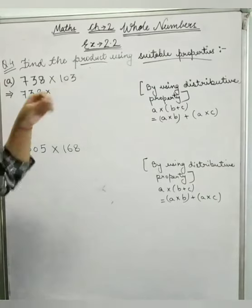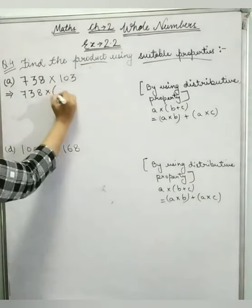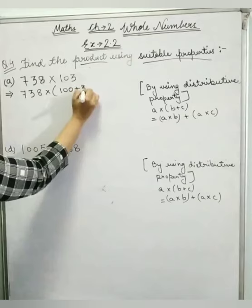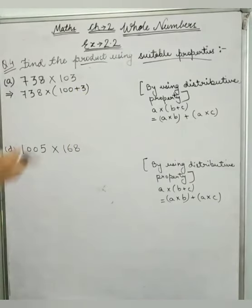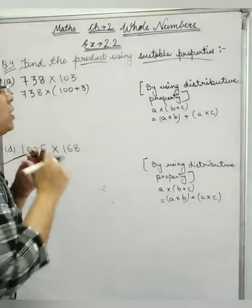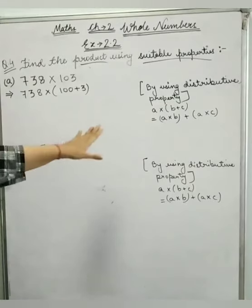I will distribute this. How is it? 100 plus 3. 103 is 100 plus 3. Now this is the distributive property.